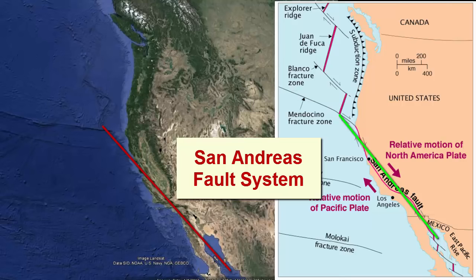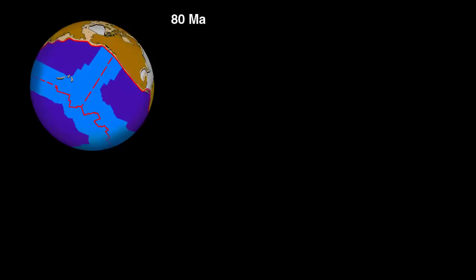Why is the transform so long? What made it this way? And why are these seafloor spreading centers so close to the continent and not in the middle of the ocean? This animation from the University of Santa Barbara shows what the Pacific Ocean looked like 80 million years ago, when the mid-ocean ridge seafloor spreading center with all its offset transforms was actually close to the middle of the ocean.